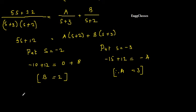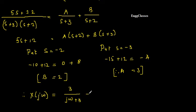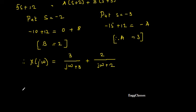Now substituting back, replacing s with jω: X(jω) = 3/(jω + 3) + 2/(jω + 2). This is now in the standard form from which I can take the inverse Fourier transform very easily.